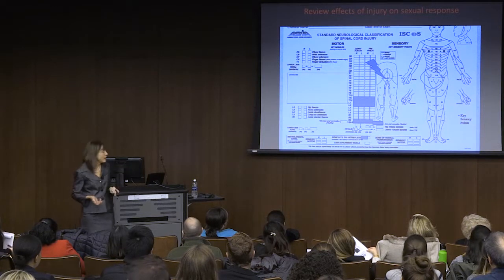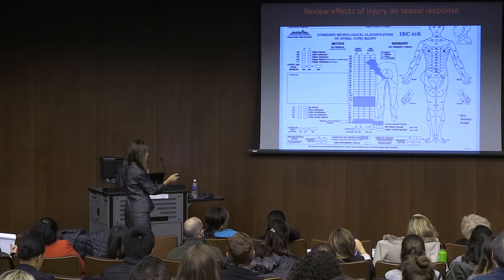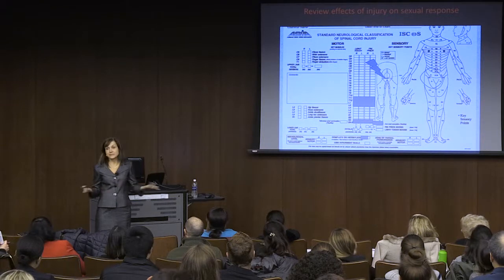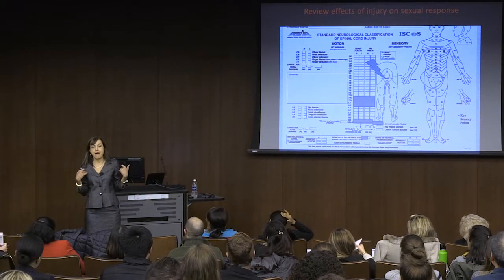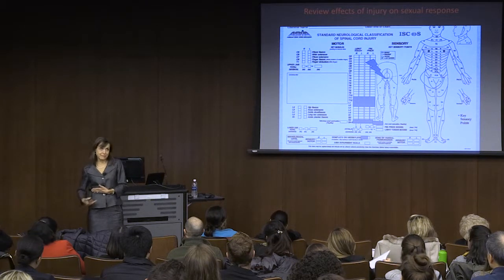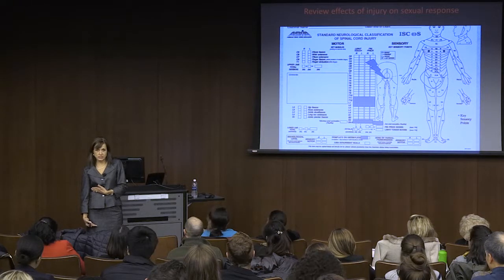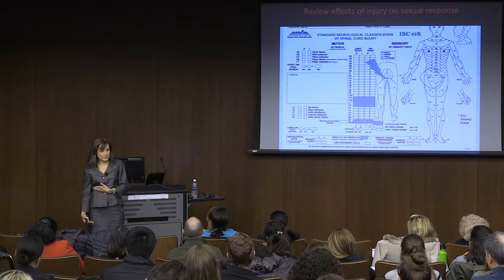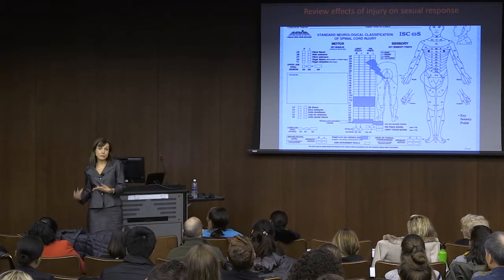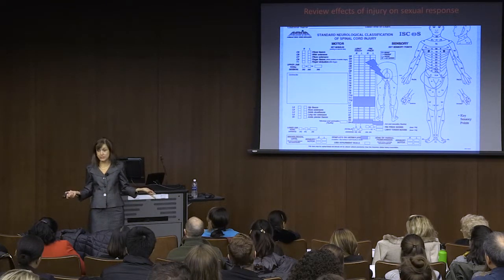Going back to our neurologic exam—from belly button to pockets—we see the patient and know, for instance, if they're like a high para with no sensation from the belly button to pockets, then we're going to say they don't have psychogenic lubrication or erection. When they have no sensation there, you don't have the psychogenic response. But then they would have reflex arousal because they're hyperreflexic due to their injury, and they should potentially have orgasms.